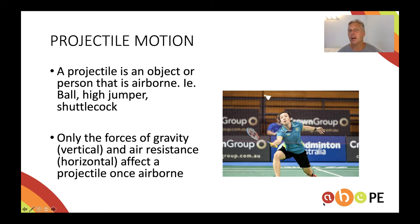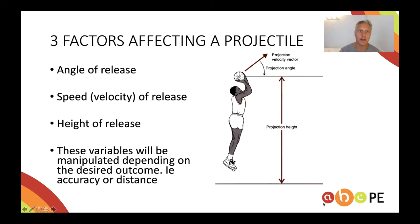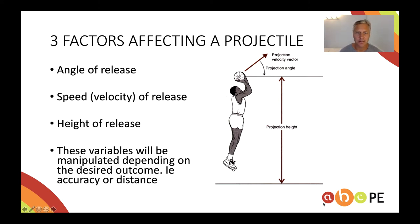Whilst in the air, the only forces that will affect the flight of a projectile are gravity — which acts vertically — and air resistance, which acts horizontally. But before the object is airborne, we can have a fair say on the flight path. The way we do that is via the angle, the speed, and the height at which we release the projectile. These variables will be manipulated depending on what the objective is in the sport.